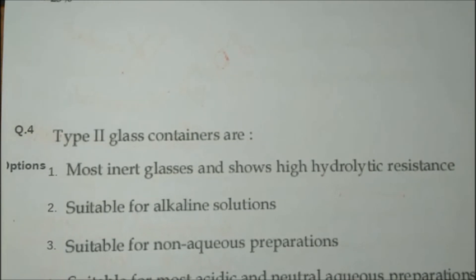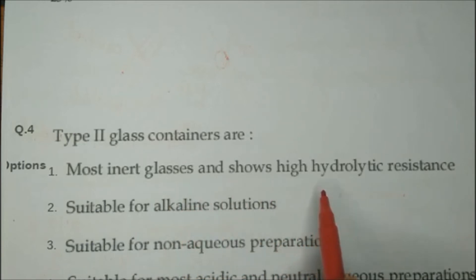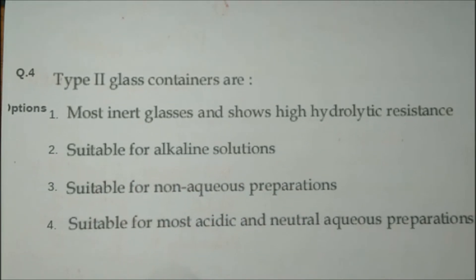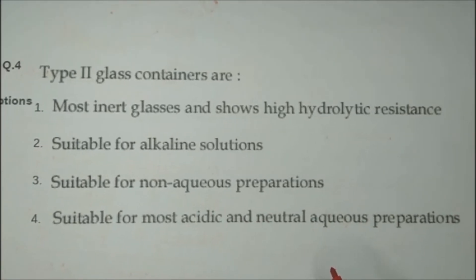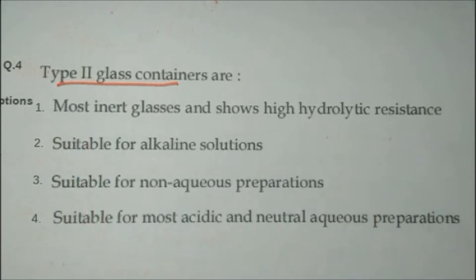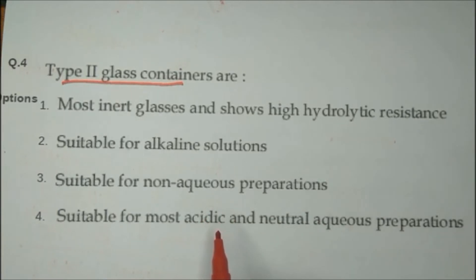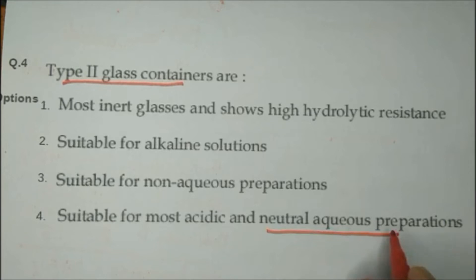Question number four: Type 2 glass containers are — options are: borosilicate glass with high hydrolytic resistance; suitable for alkaline solutions; suitable for non-aqueous preparations; or suitable for most acidic and neutral aqueous preparations. Glass containers are classified into four types: type 1, 2, 3, and 4. Type 2 glass containers are suitable for storing neutral aqueous solutions and acidic preparations.